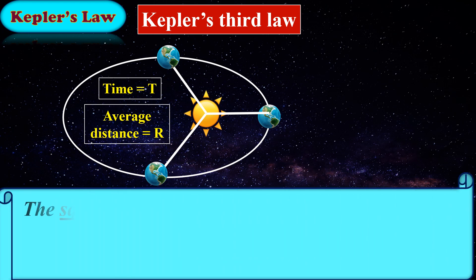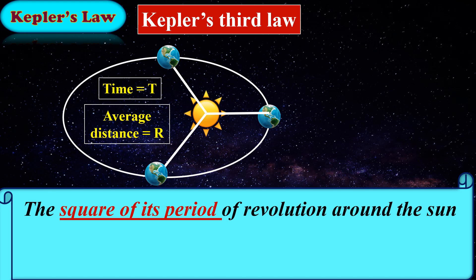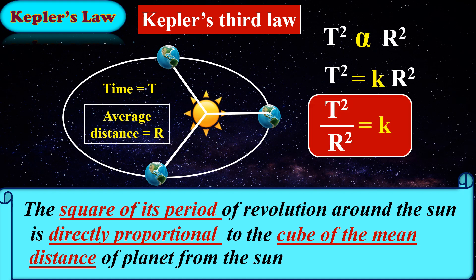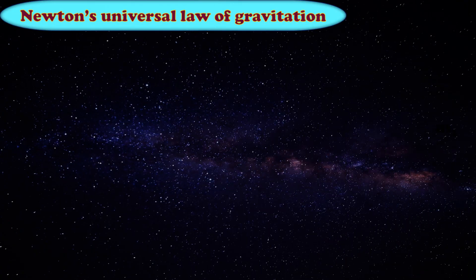So, according to Kepler's third law, the square of its period of revolution around the sun, that is T², is directly proportional to the cube of the mean distance of the planet from the sun, that is r³. Newton's universal law of gravitation.